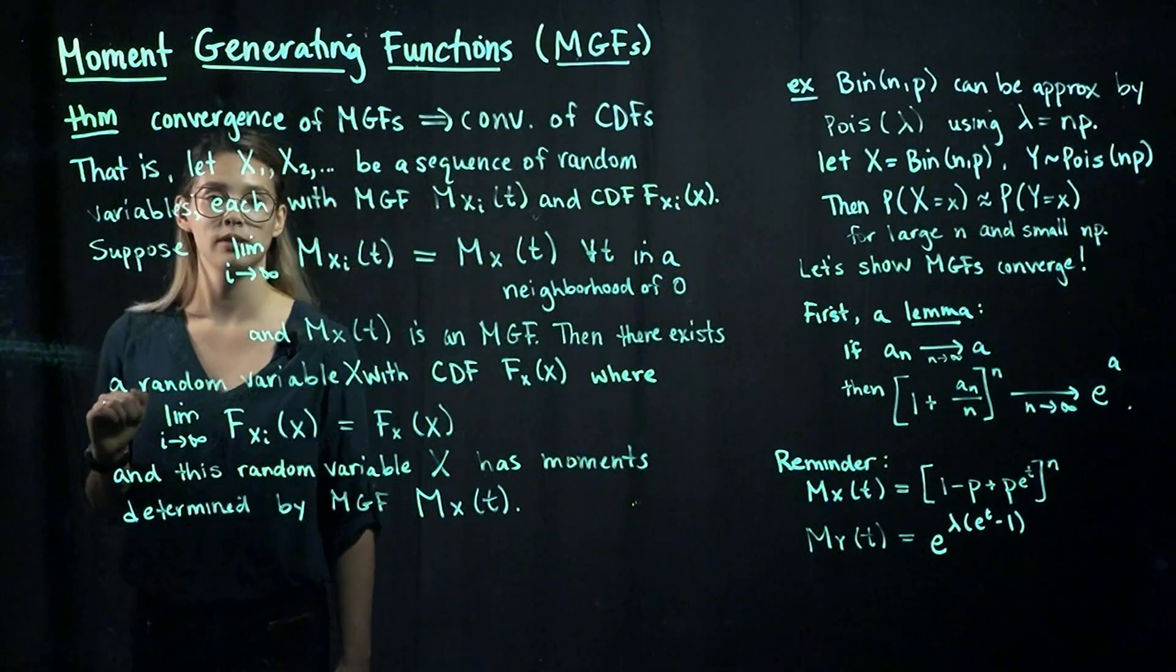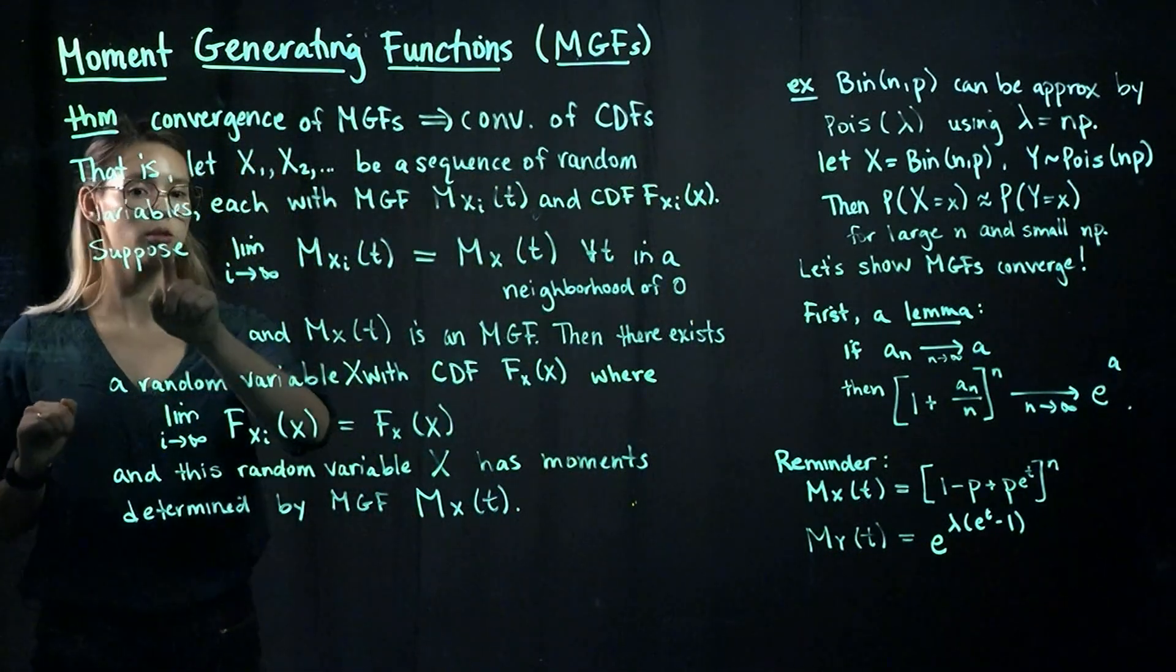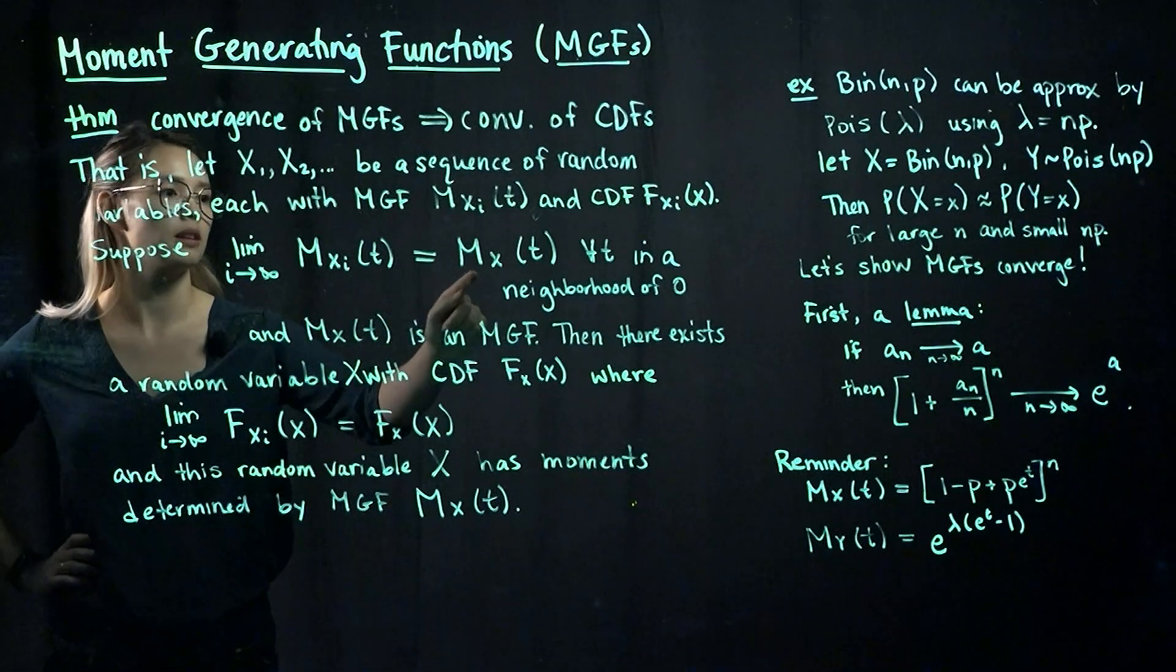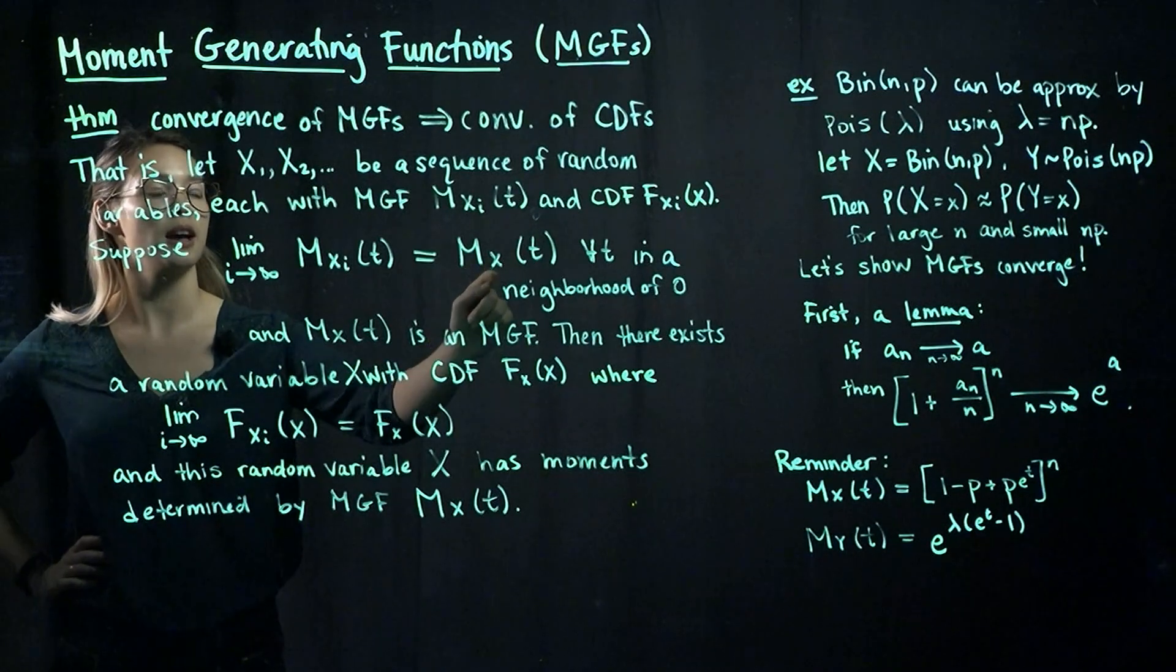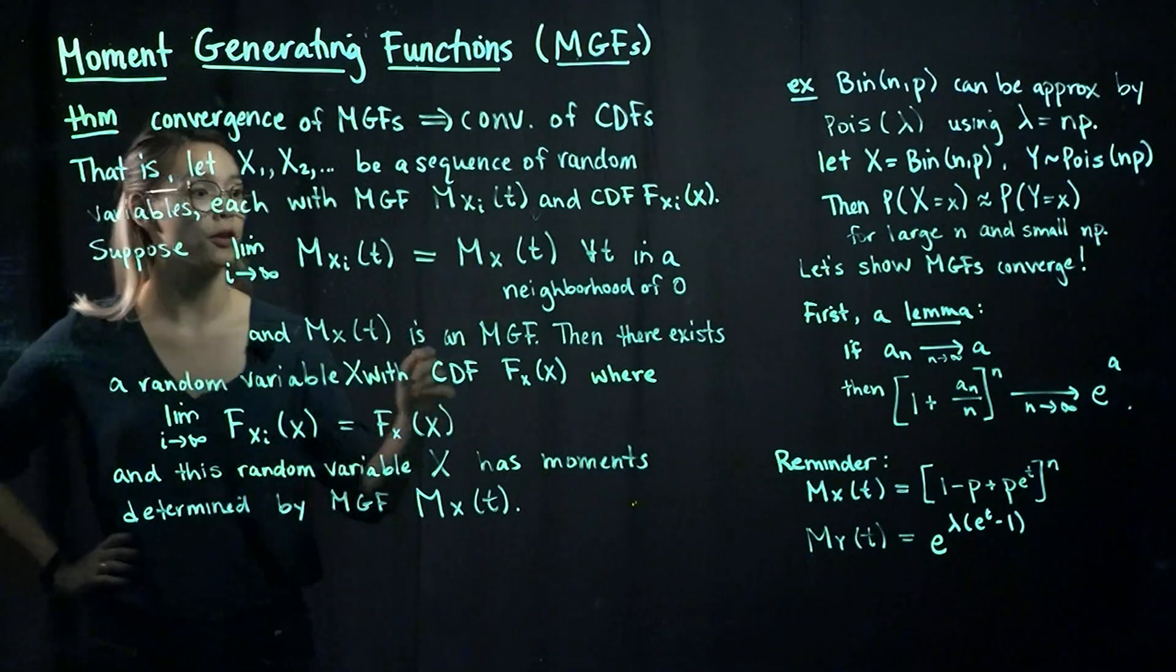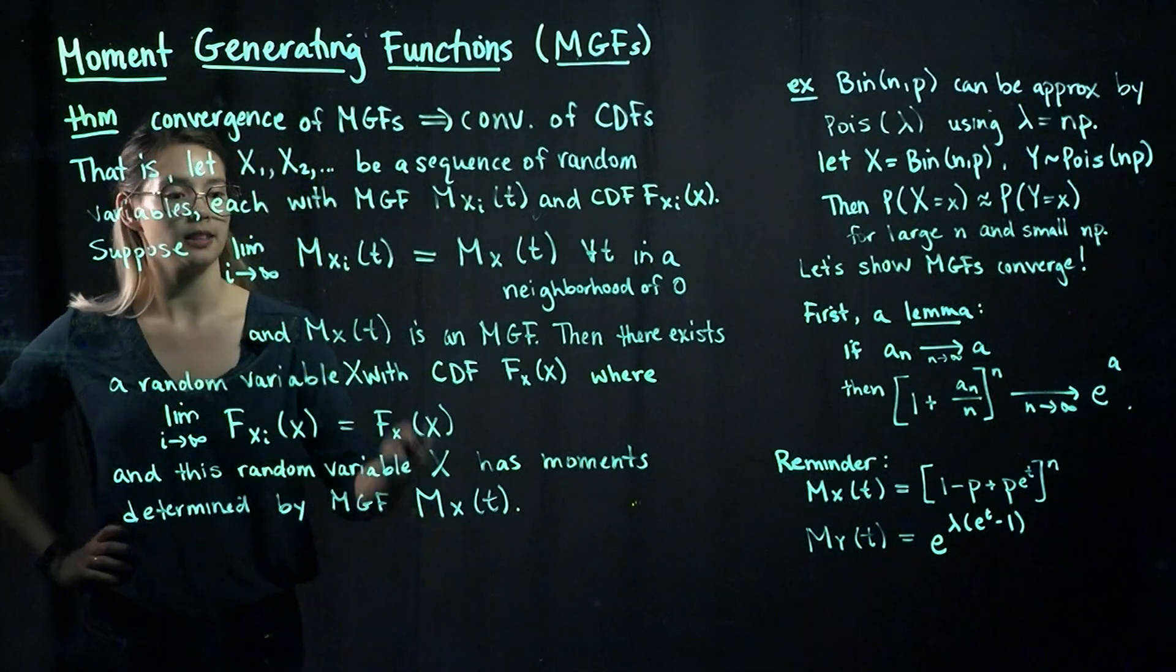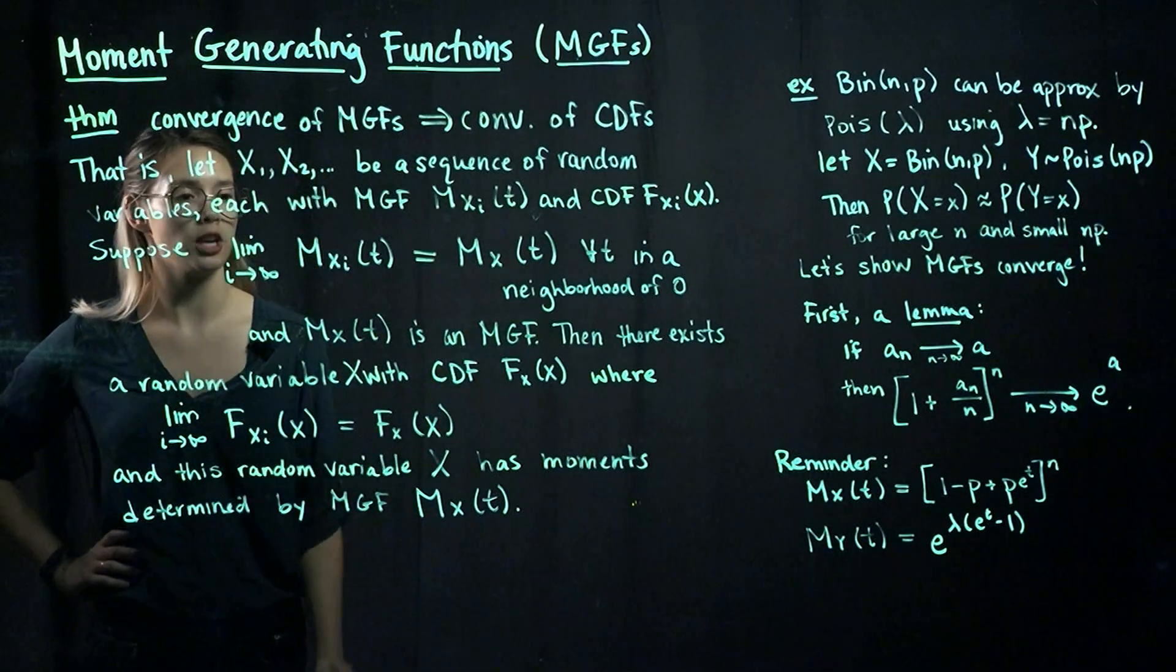Let's think about the limit of these MGFs. Suppose that this limit, as i goes to infinity, equals some mx of t, so some MGF, for all t in a neighborhood of 0. And let's have this limit be an MGF.